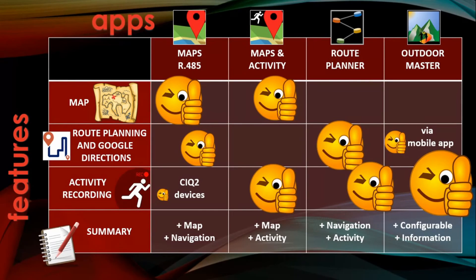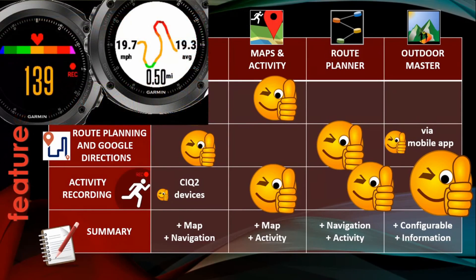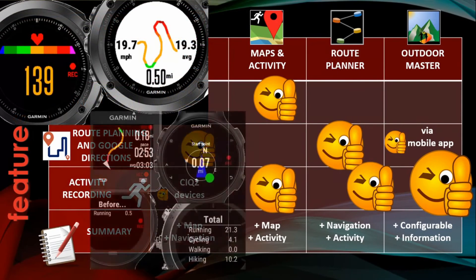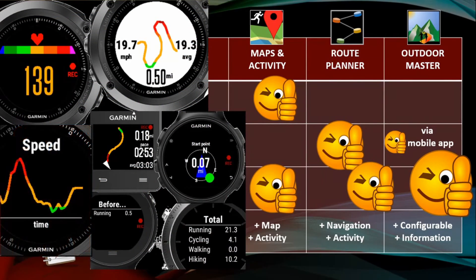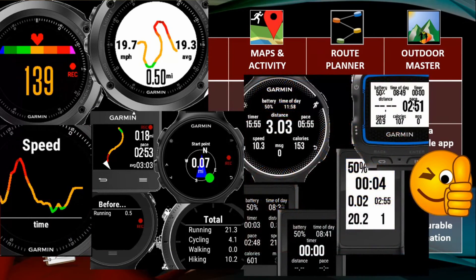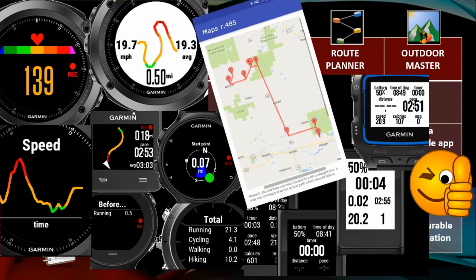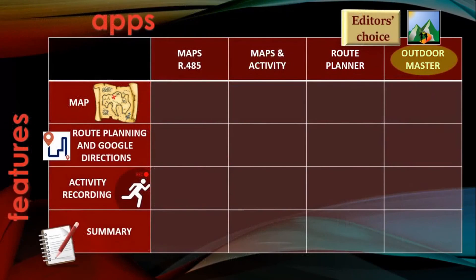Last, but not least, the Outdoor Master is the most configurable and also the one that presents the most details from your activity. It shows a track colored according to your speed, very nice charts and graphs, and multiple screens with many options for layouts and data. It does not show a map image, and it requires the companion app for planning a route. Still, I honestly think it is the best option.